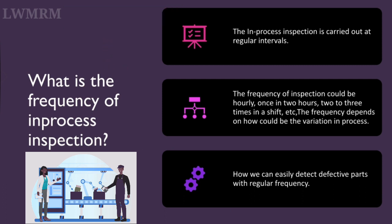What is the frequency of in-process inspection? The in-process inspection is carried out at regular intervals. The frequency of inspection could be hourly, once in two hours, two to three times in a shift, etc. The frequency depends on how much variation there could be in the process, and how we can easily detect defective parts with regular frequency.